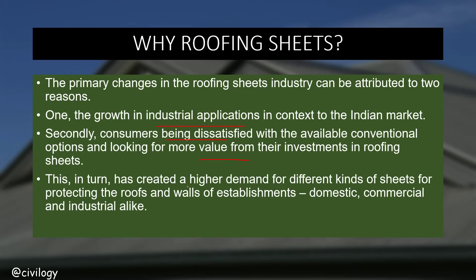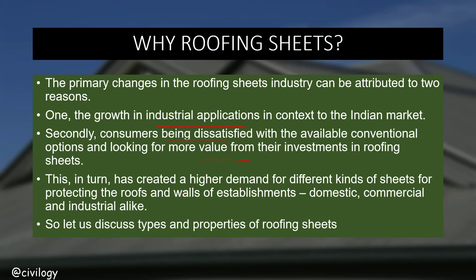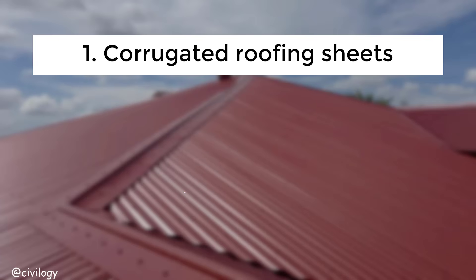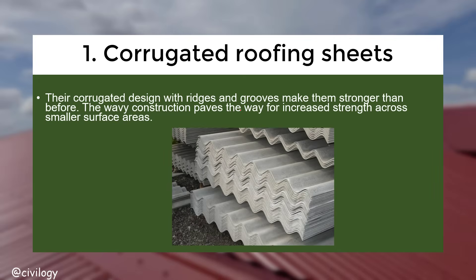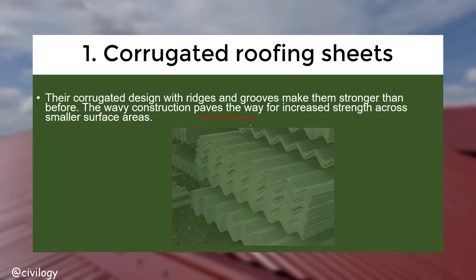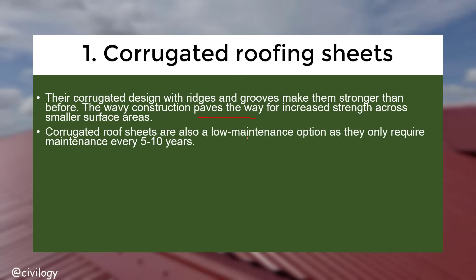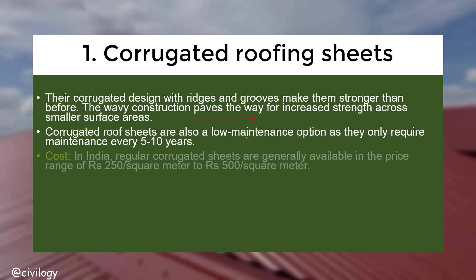This created great demand for roofing sheets. Corrugated roofing sheets have ridges and grooves which make them stronger. The wavy construction provides increased strength across smaller surface areas. Corrugated roofing sheets are also a low maintenance option, as they only require maintenance every five to ten years.